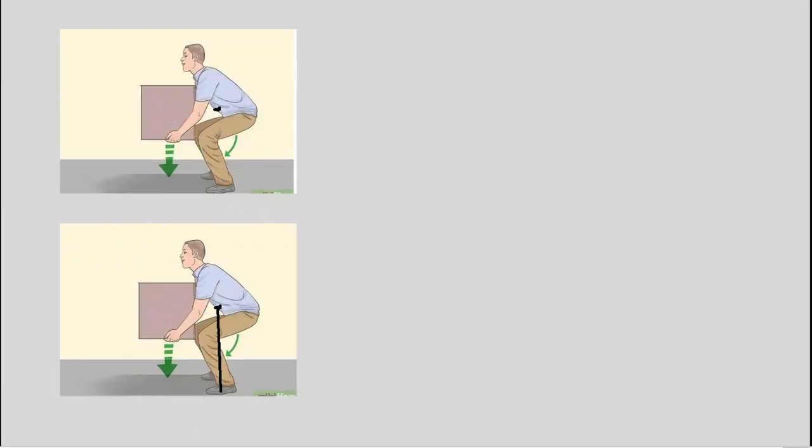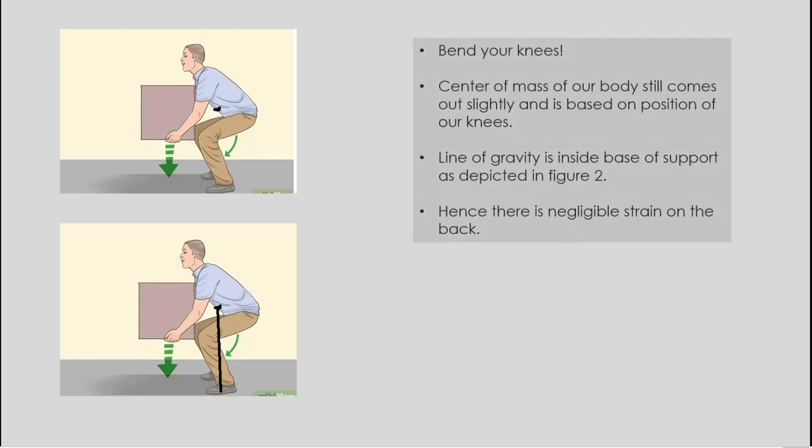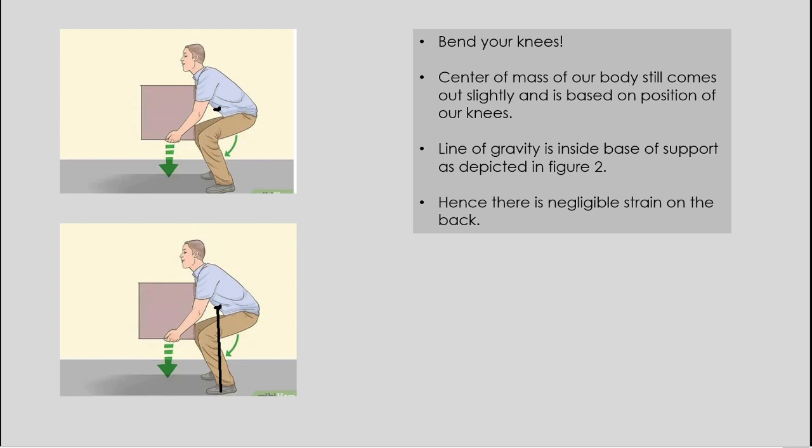The logic behind bending our knees while bending is quite simple. When we bend our knees while bending, the center of mass of our body still comes out slightly. However, the way we position ourselves with our knees bent gives us a different result. As we can see in the figure, the person bending has bent his knees and therefore the line of gravity is still inside the base of support. This causes almost negligible strain on the back.